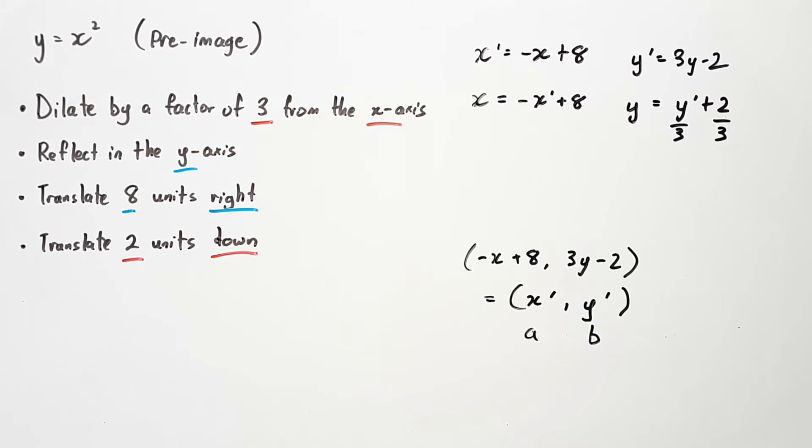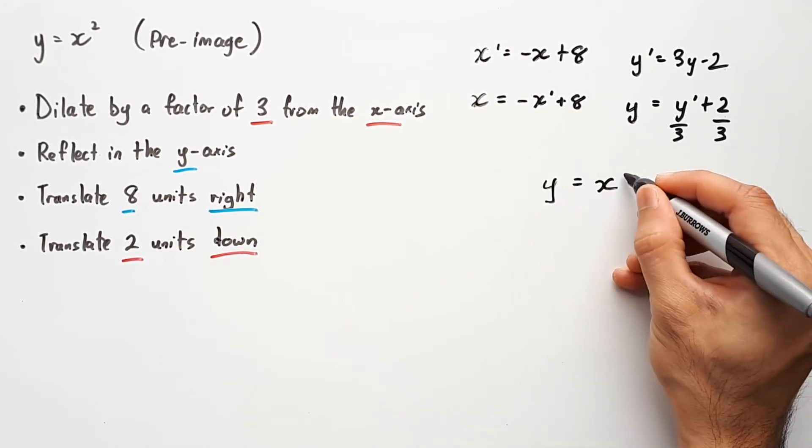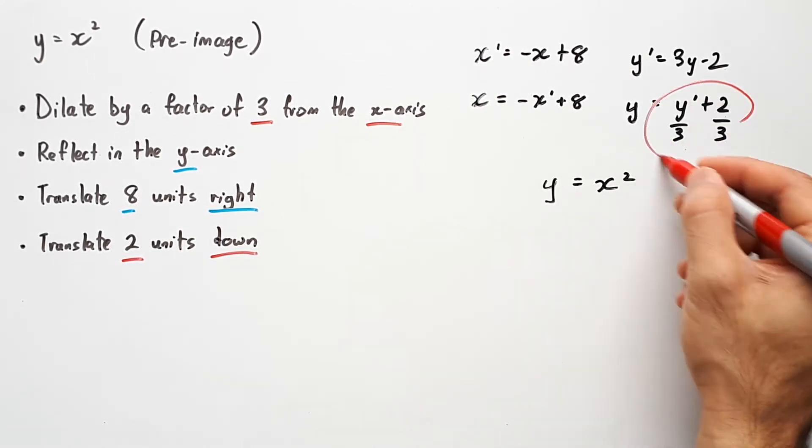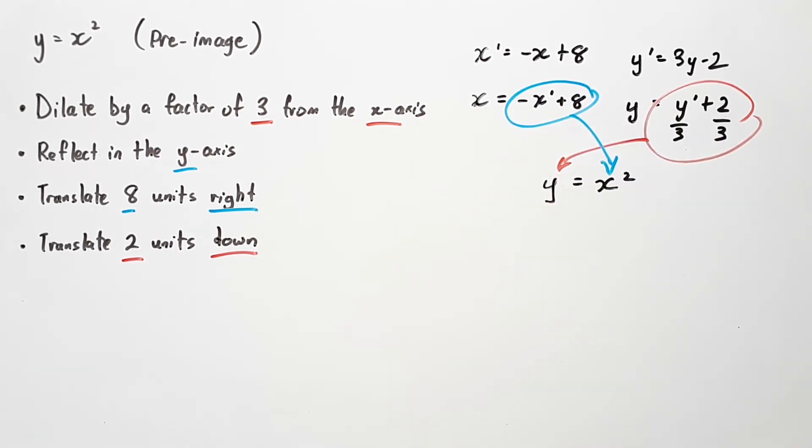The reason we're doing this is because we don't have any information about the image, but we do have the pre-image equation, and that's in terms of x and y. So if we can swap those bits out using what we just found here, we will be able to rewrite our equation in terms of the x' and y' terms.